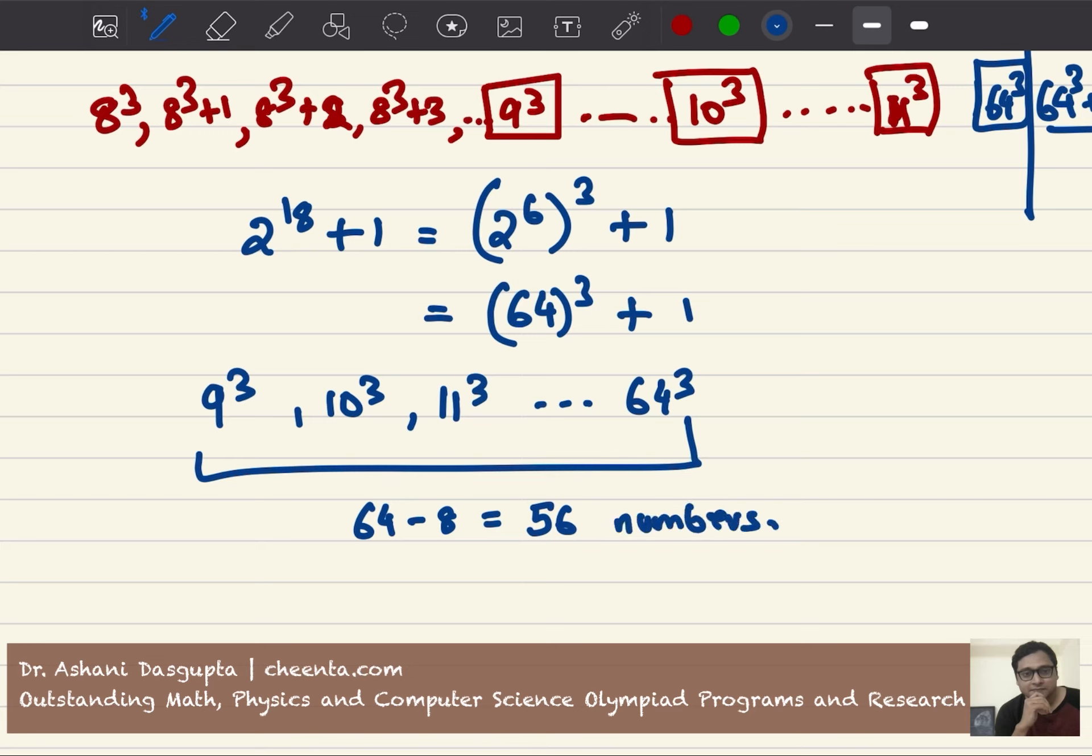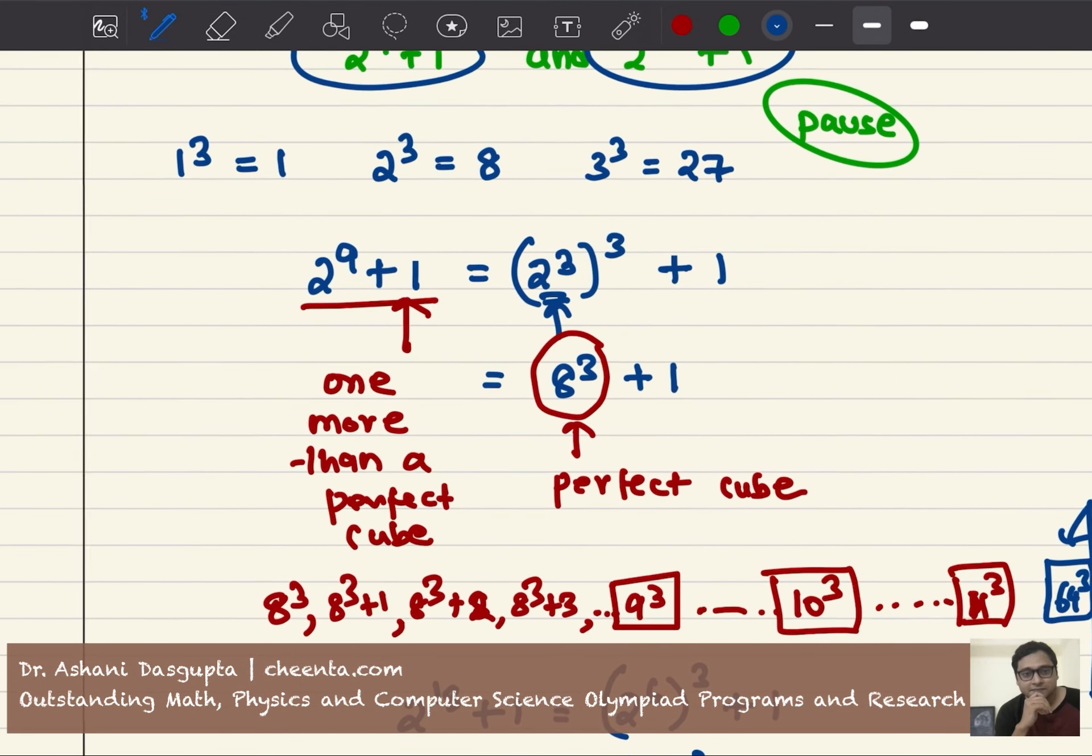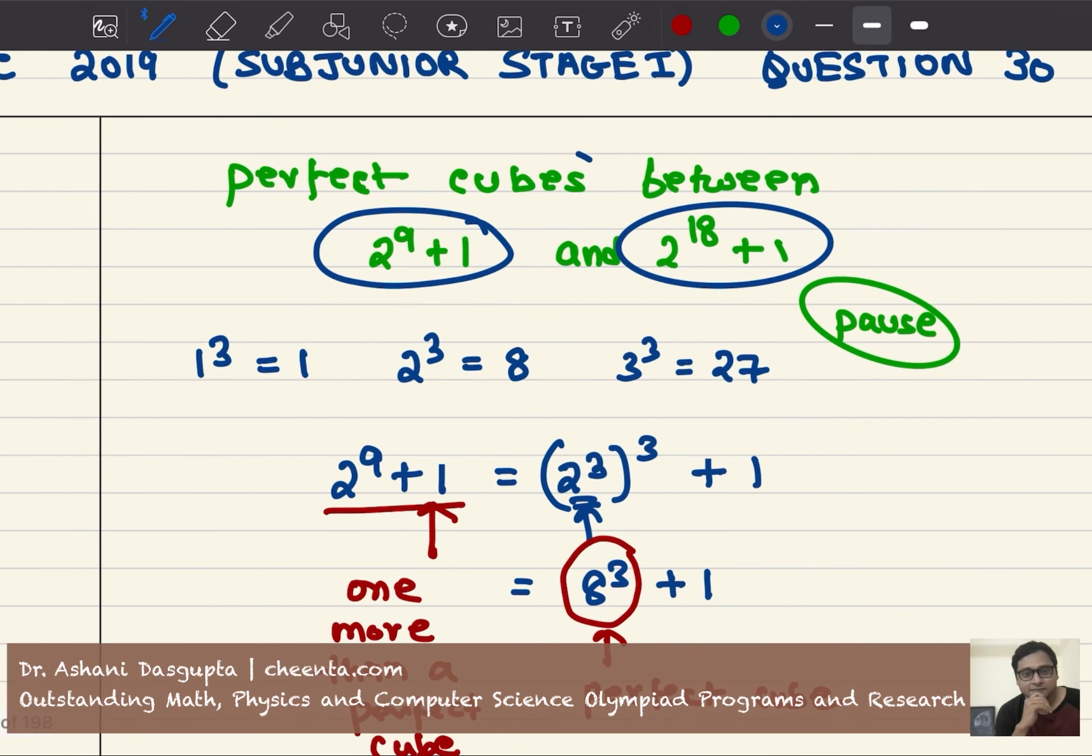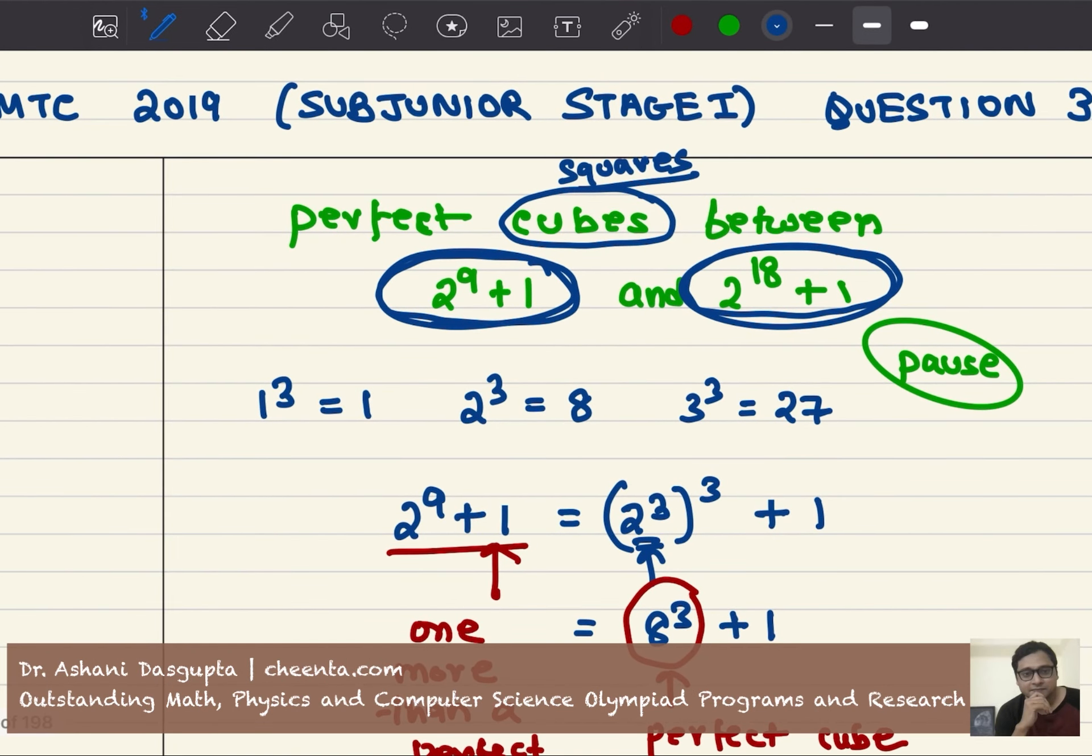Here is a challenge problem. Can you count the number of perfect squares between 2 to the power 9 plus 1 and 2 to the power 18 plus 1? Give it a try. If you can, put a comment in the description. How many squares are there between 2 to the power 9 plus 1 and 2 to the power 18 plus 1? Let's see who can answer this question.